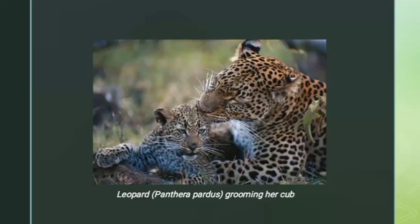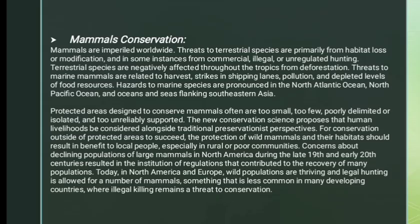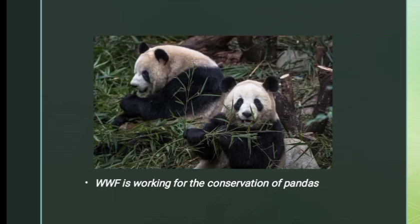Here is a picture of a female leopard. Mammals Conservation: Mammals are imperiled worldwide. Threats to terrestrial species are primarily from habitat loss or modification and in some instances from commercial, illegal, or unregulated hunting. Terrestrial species are negatively affected throughout the tropics from deforestation. Lately, WWF is working for the conservation of pandas.